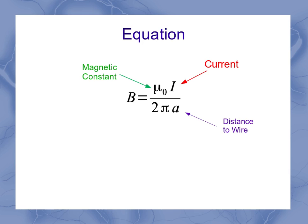And a here is the distance to the wire. So if you can imagine, I've got some sort of long wire carrying current, and I want to find the magnetic field at some point P, then a is going to be the distance straight down from that point to the wire.